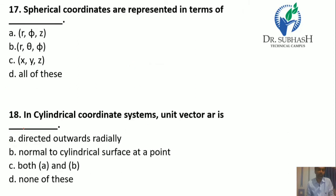Question 17: Spherical coordinates are represented in terms of R, θ, and φ — or equivalently Rho, θ, and φ. So the answer is A: R, θ, and φ.